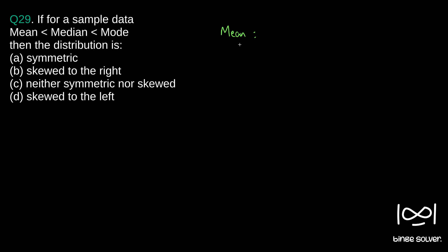Mean is the average of all the values. To get the average, we first sum all the values, then divide by the number of values: mean = sum of all values / number of values. This is what mean is.